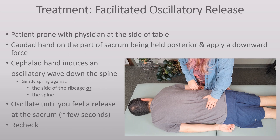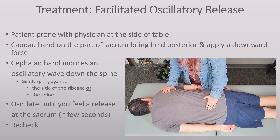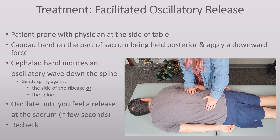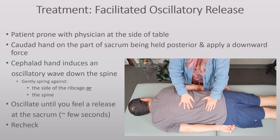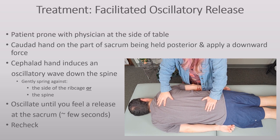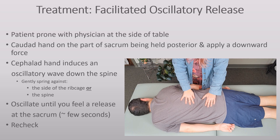One way to treat a sacrum with FOR is to have the patient prone with the physician at the side of the table. Place your caudal hand on the part of the sacrum that is being held posteriorly and apply a force downward towards the floor. Your cephalad hand induces an oscillatory wave down the spine, either gently springing against the side of the ribcage or the spine. Usually the ribcage works well, but if there is rib somatic dysfunction at the site you need to spring on, it may be uncomfortable to do so. Sometimes sending the wave by pushing closer to the spine is better than pushing out more laterally. The wave pattern you create should entrain the sacrum into a more functional motion, and you may also need to direct it towards the stuck joint to ping the sacrum free. Pinging against the joint seems to be more necessary for sacral base posterior dysfunctions. Oscillate until you feel a release at the sacrum — it shouldn't take more than a few seconds once you get the hang of it.